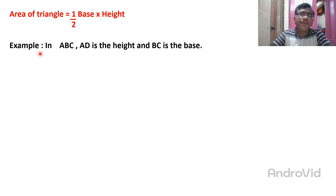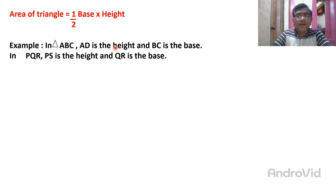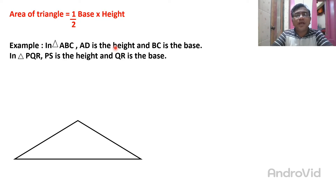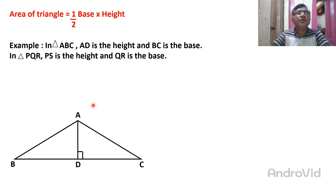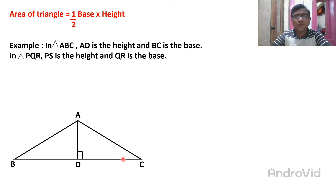There is an example: in triangle ABC, AD is the height and BC is the base. In triangle PQR, PS is the height and QR is the base. So with help of that we can draw a diagram. This is triangle ABC. In this triangle ABC, BC is the base and AD is the height.